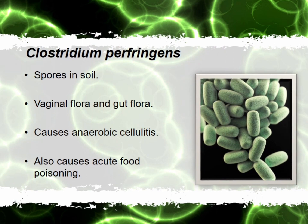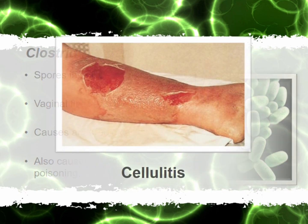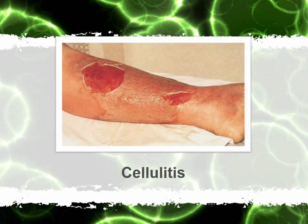Clostridium perfringens — this species is a rod-shaped bacteria found in soil, so technically it travels with dust. They are also found around the vaginal and intestinal tract. Clostridium perfringens causes cellulitis, where we can see the skin getting distorted. This is a very painful situation where the external part of the body is getting damaged.